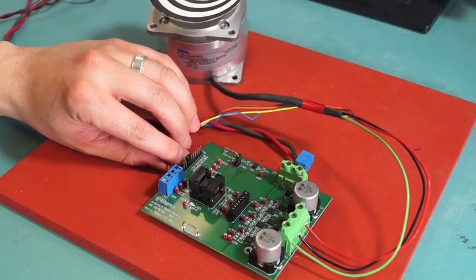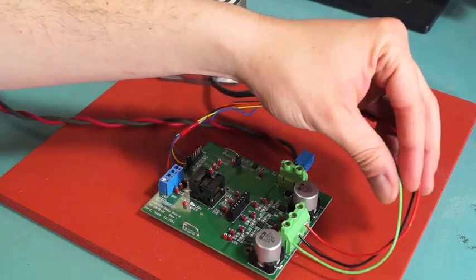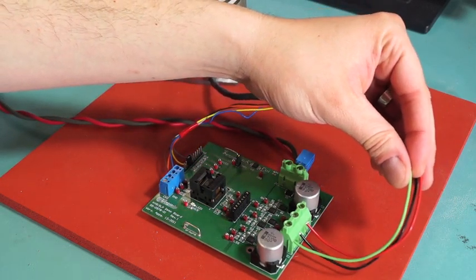We have our A4915 development kit completely set up with a motor. We have a brushless DC motor attached with the signal wires for the hall sensors, the output wires for the motor windings, and we have our DC bus supply.